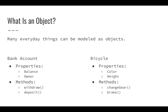Methods are actions that an object can perform. A bank account — we might withdraw from it or deposit to it. With a bicycle, we might change gears, brake, or pedal it. Objects give us the capability to take real-world concepts and model them in a way that makes sense, grouping things together so they can own their own data and operate on their own data.